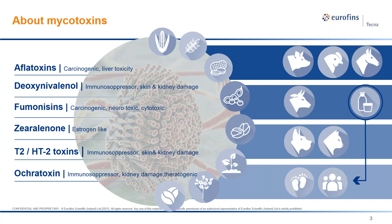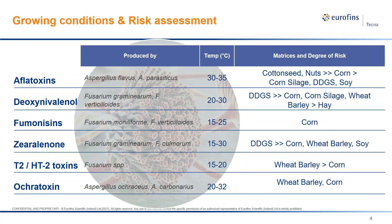These toxins also have several regulations or at least recommendations related to the maximum concentration permitted in food, food ingredients and feed materials, with regulations amended by the FDA, the European Union and locally by several countries like China, Japan and India.